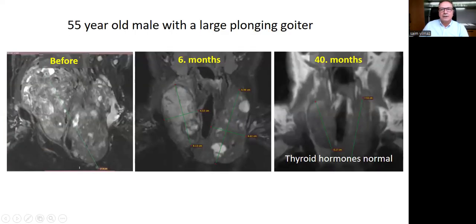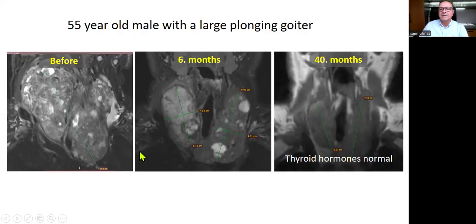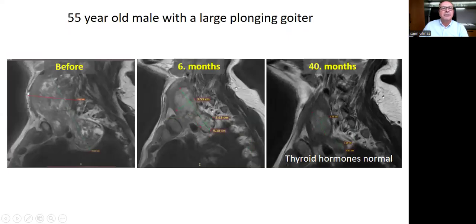This is the coronal MRI image of a 55-year-old man who underwent embolization for a large plunging goiter. This is before the procedure — it is difficult to say that this organ is actually a thyroid. But at six months it looks like a relatively enlarged thyroid, and at 40 months the thyroid looks close to normal. The thyroid hormones are still in the normal range at 40 months. This is the same patient in sagittal MRI view — you see the clavicle level and the plunging part of the goiter. At six months that part has shrunk significantly, and at 40 months it is even smaller. Most importantly, thyroid hormones are still normal in this patient.